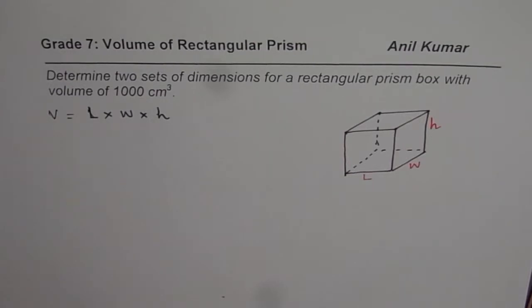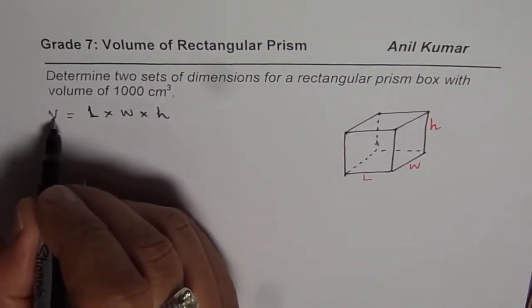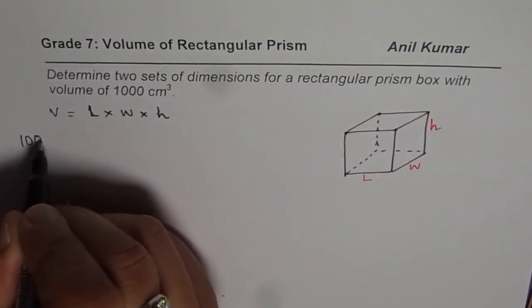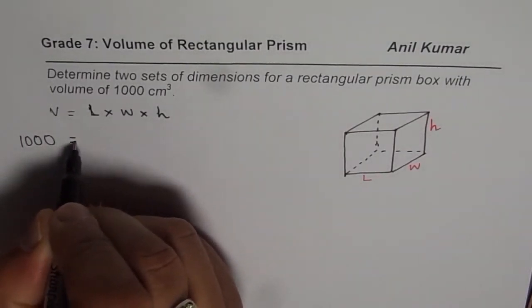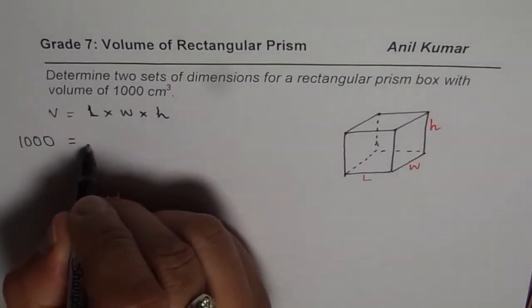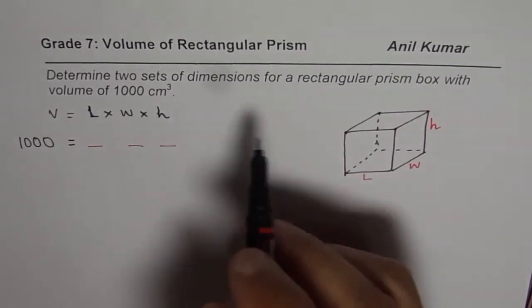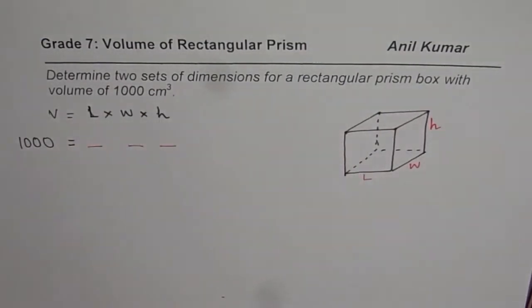Now in this particular equation, we are given volume as 1000 centimeters cube. And what we need to find is length, width and height. We need to find at least two sets. Now the question is, how do we do it?